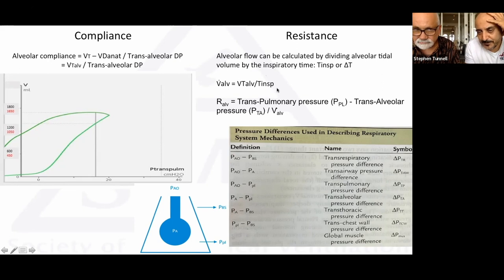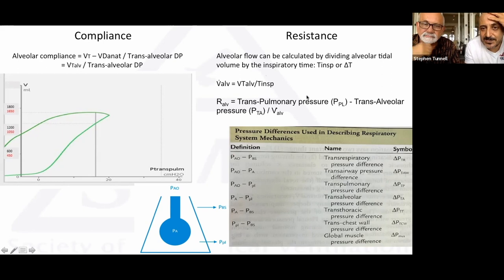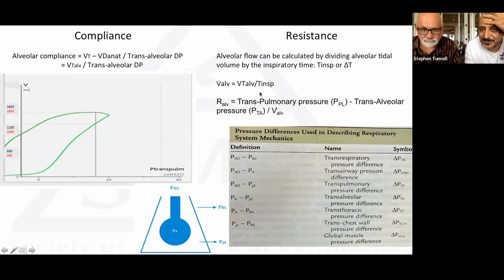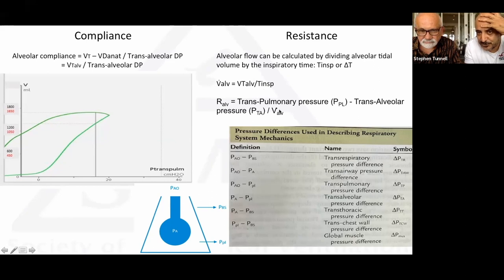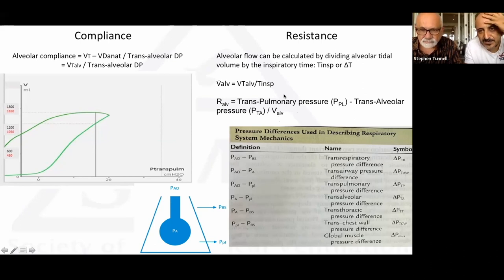My colleague Dr. Claudio Frank came up with a brilliant formulation: flow = tidal volume / time. So alveolar resistance = (transpulmonary pressure − trans-alveolar pressure) / alveolar flow. There is often confusion between transpulmonary pressure (airway pressure − pleural pressure) and trans-alveolar pressure (plateau pressure − pleural pressure). As Rob Chatburn described in our Egan's chapter, these are distinct values.